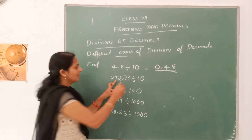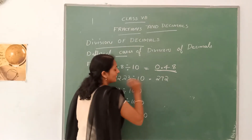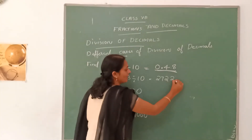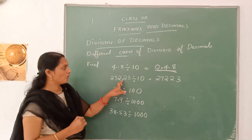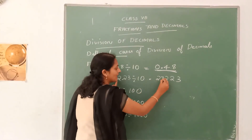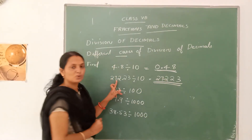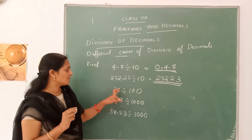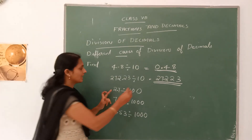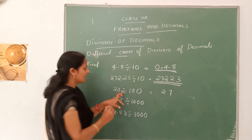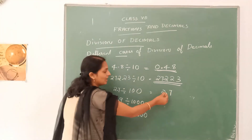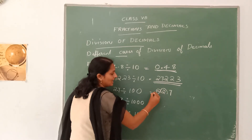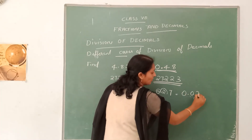Next, for 272.23 divided by 10: ignore the decimal to get 27223, and the decimal moves from right to left 1 digit, giving the answer 27.223. When we divide a decimal by 100, the decimal moves from right to left 2 digits. For 27 divided by 100: write 27, move the decimal two places to the left, put a 0 on the right side, and the answer is 0.027.